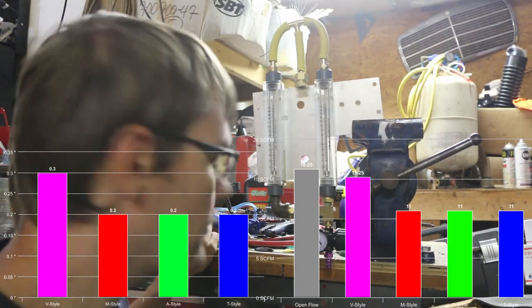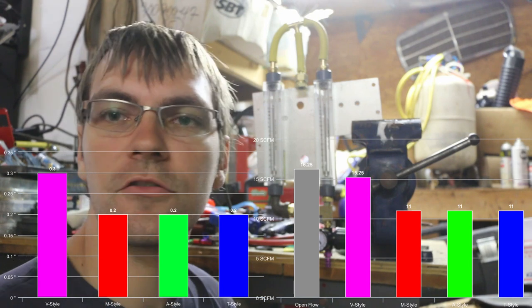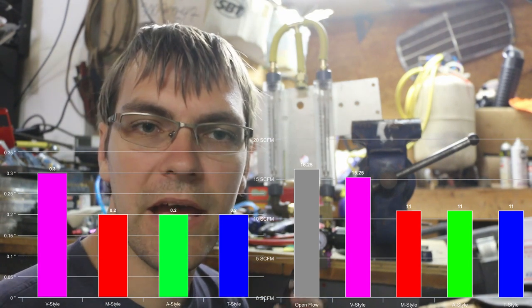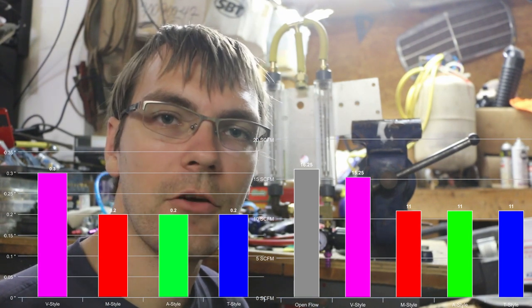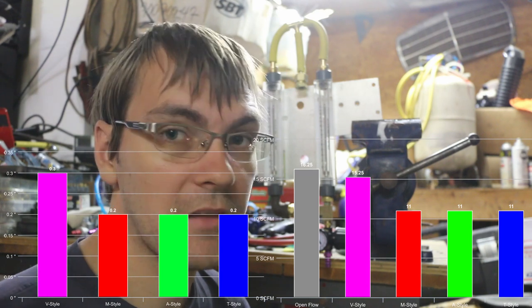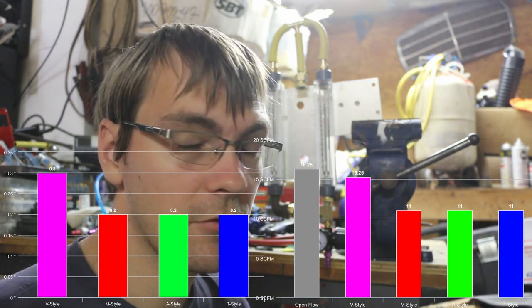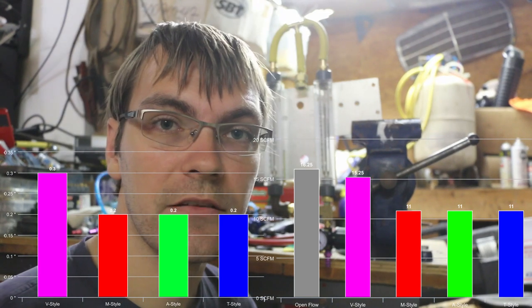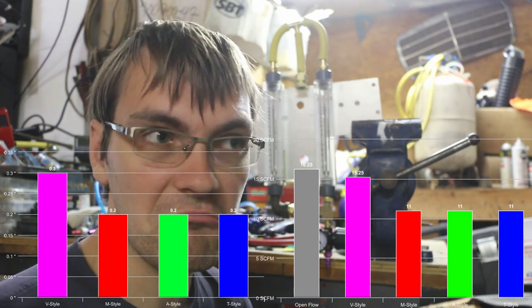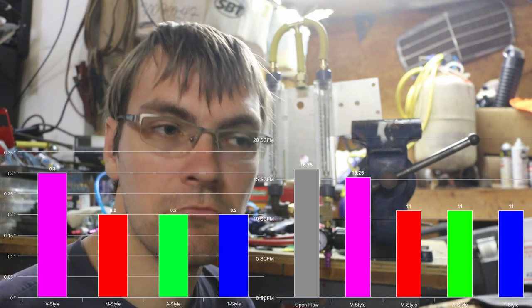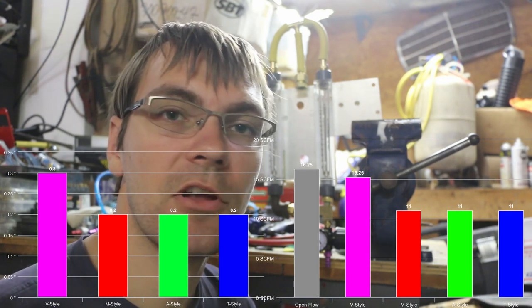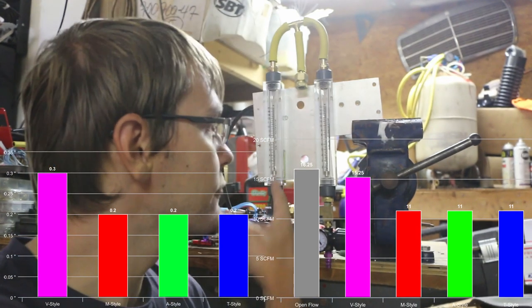So that is a full thousandth of an inch smaller than the high flow fitting. So that's a restriction, and all of them are fairly equal. For the most part, you could measure your fittings, and if they're around 0.002 of an inch, they're going to be a low flow fitting. And as we've proven here, they're going to flow less.